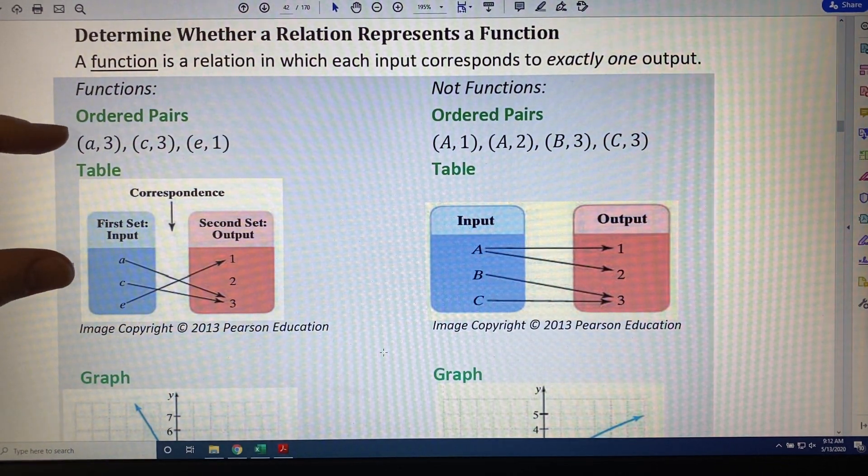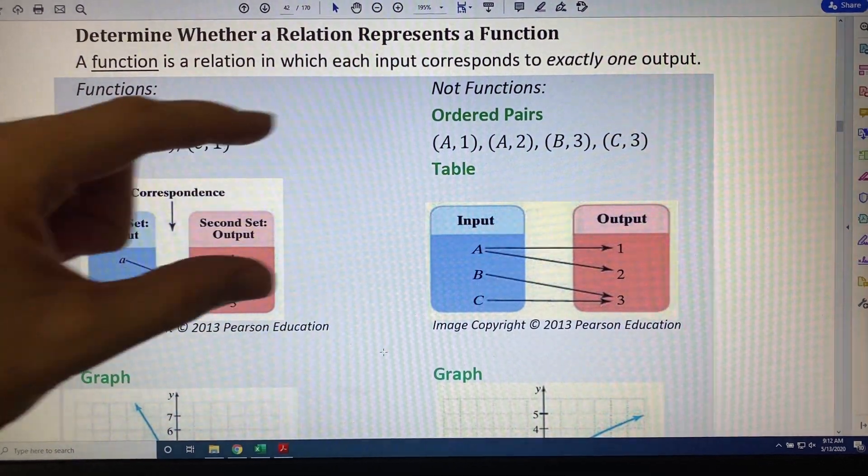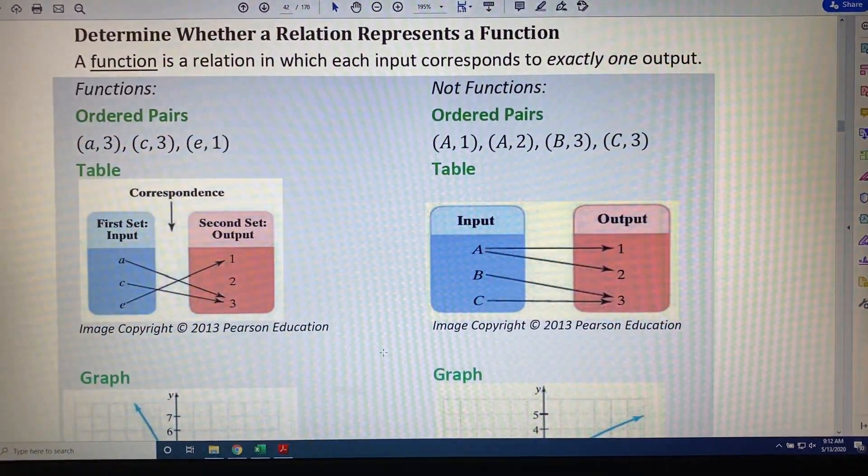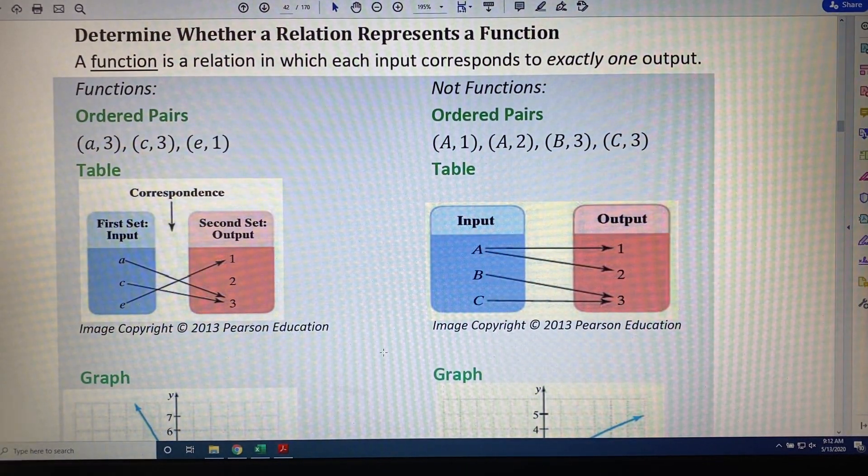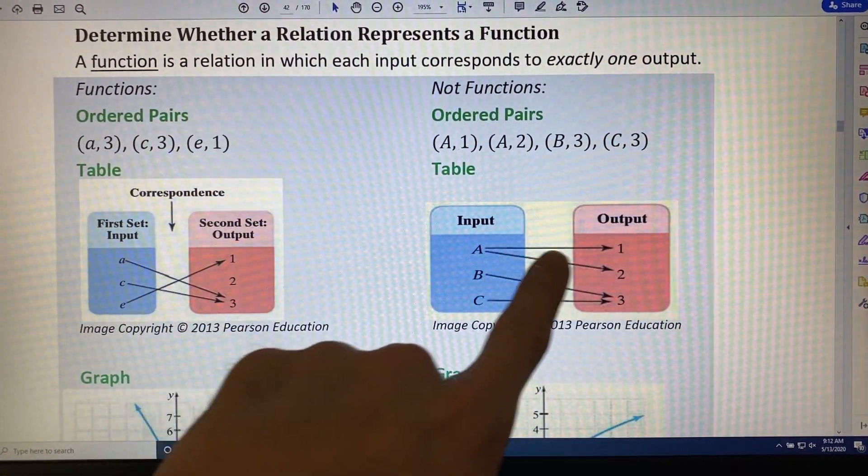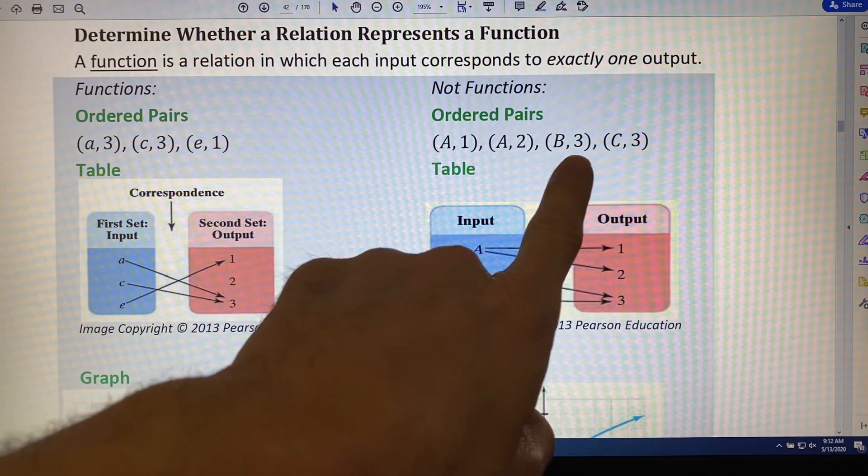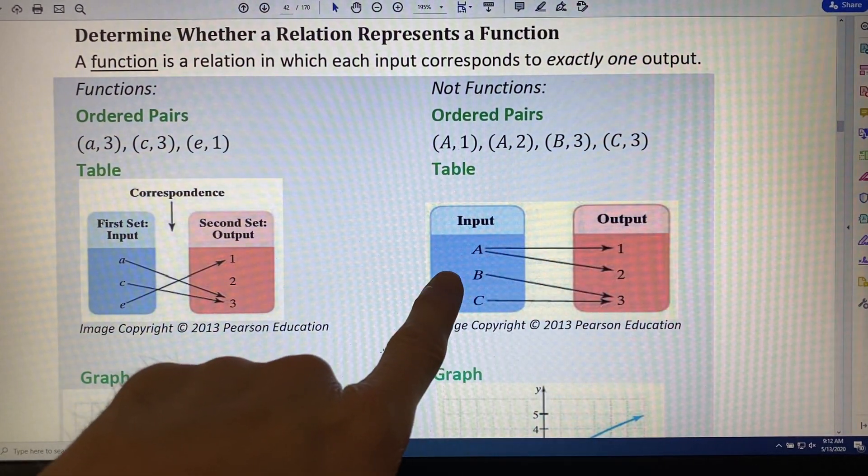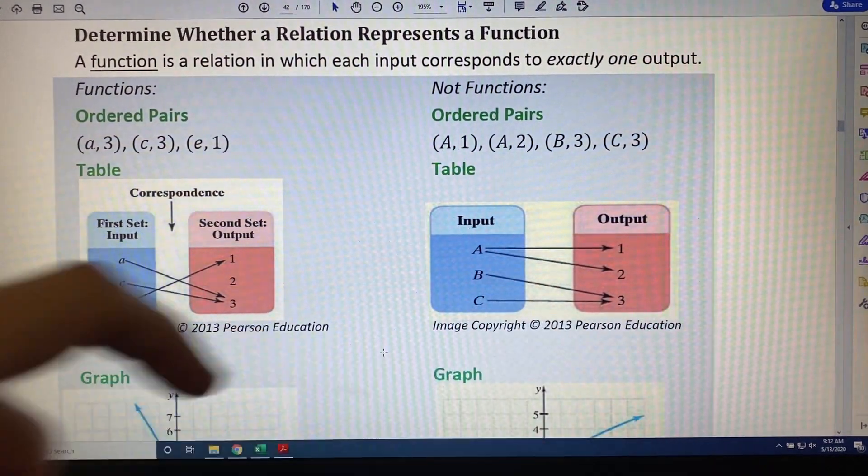You might have noticed that the ordered pair and table on the left, and the ordered pair and table on the right, represent the same relationship. A leads to 1, and also to 2. B leads to 3. C also leads to 3.